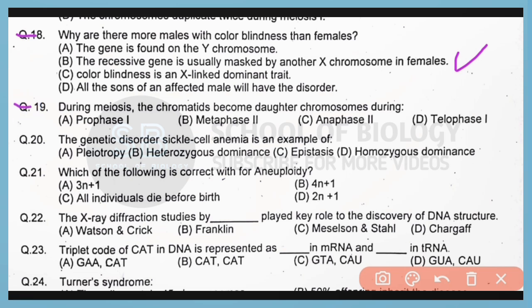Question 19. During meiosis, the chromatids become daughter chromosomes during anaphase 2. Correct answer is option C.